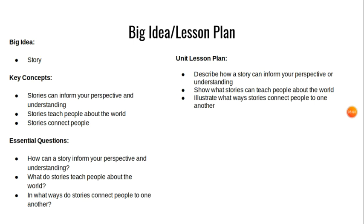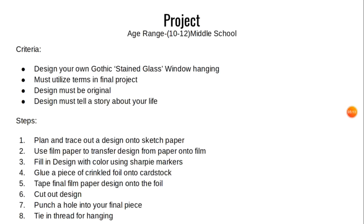That's basically what I would want my students to focus on for this project. The criteria for the project would be to design your own Gothic stained glass window hanging. They would have to utilize the terms we went over earlier in the final project. Their design would have to be original, incorporate geometric shapes, and be creative. The design must also tell a story about their life — they'd have to think back on some kind of story that holds importance in their life and incorporate that into their glass window.